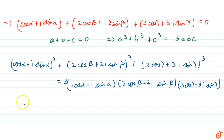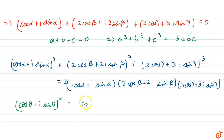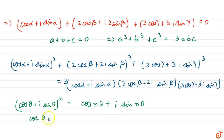Now we use De Moivre's theorem, which says cos theta plus iota sin theta whole power n equals cos n theta plus iota sin n theta. Also, cos theta plus iota sin theta equals e to the power iota theta.